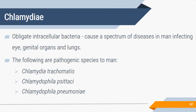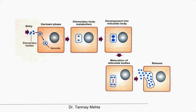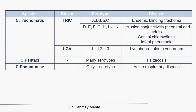Chlamydia is another obligate intracellular bacterium. The three main species are C. trachomatis, C. psittaci, and C. pneumoniae. The Chlamydia life cycle involves: the elementary body (extracellular, infectious form) enters the cell, converts to the reticulate body (intracellular, replicative form), multiplies, fills the cell, and ruptures it to release new elementary bodies.